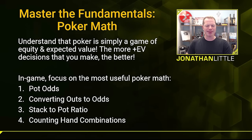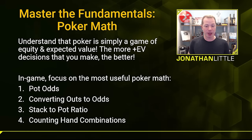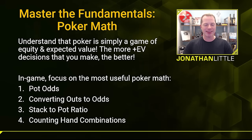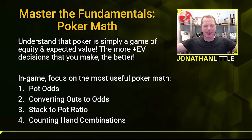So that is it for today. This is some fundamental poker math that you must understand. First, understand that poker is simply a game of equity and expected value — the more plus-EV decisions you make, the better. In-game, these four things are what you're going to really want to focus on: pot odds, converting your outs to odds or percentages, stack-to-pot ratio, and counting hand combinations. If you keep these things in mind, you're going to be way better off than most of your opponents and well on your way to crushing the games. If you enjoyed today's video, click the like and subscribe button, and click the notification bell. If you have a poker friend who's hung up on the math, share this video so they can get unstuck and start doing well too.